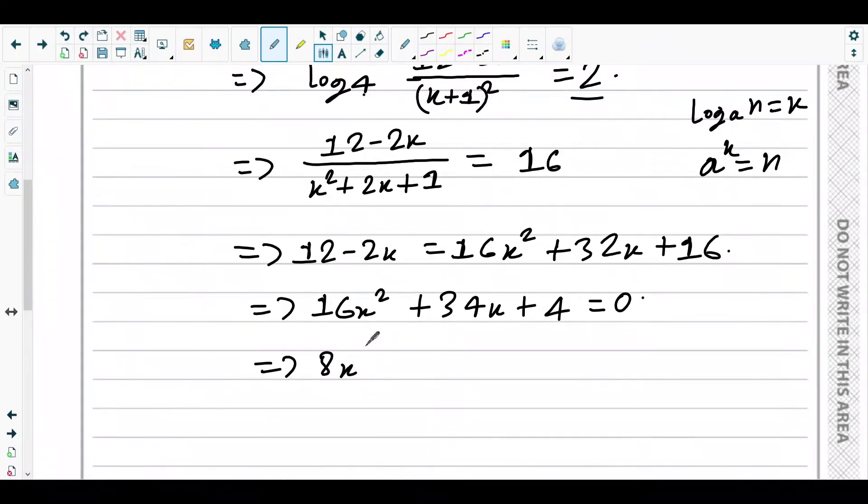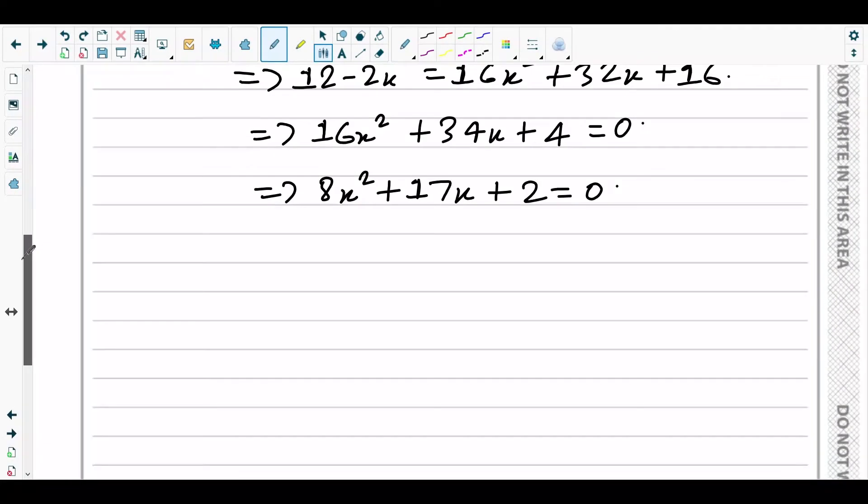For middle term, 8 times 2 is 16, so 8x² + 16x + x + 2 = 0. Take 8x common to get x + 2, then take +1 common to get x + 2. So x + 2 is common. Either x = -2 or x = -1/8.